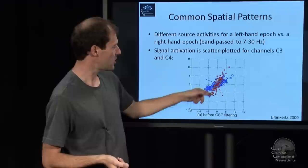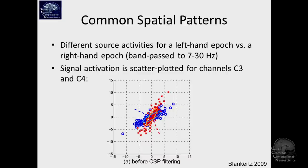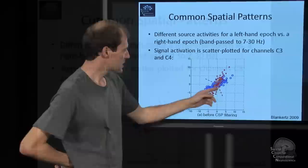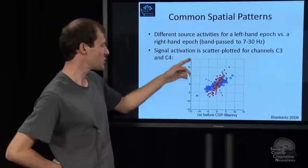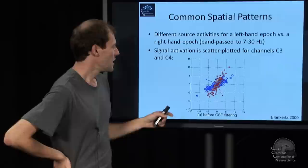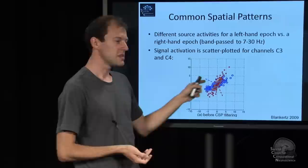So say we are talking about the red cloud of points here. Now, these are not trials. These are samples in this one trial. You see in this case, in this condition, the data has higher variance in one channel than in the other. So it's higher in C3 as opposed to C4. And in the other condition, it has higher variance in the other channel and lower variance in the one channel, so there is a difference.